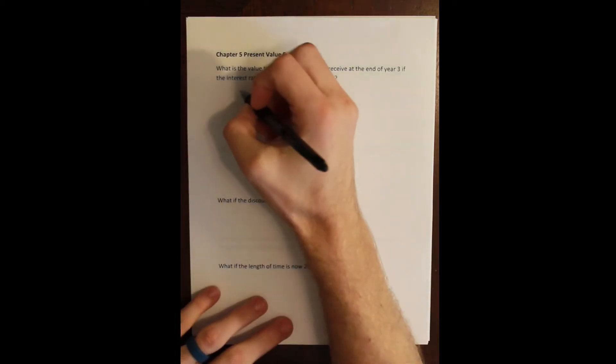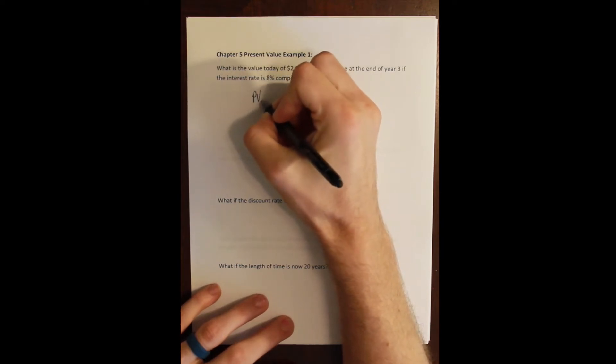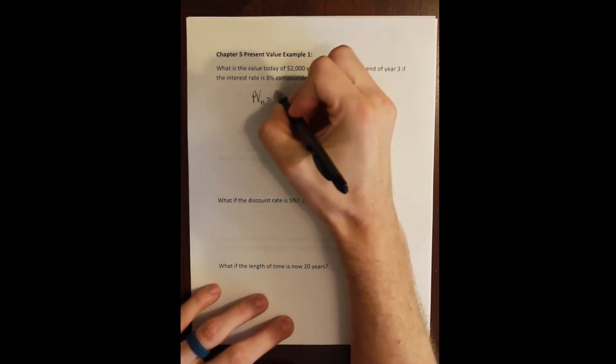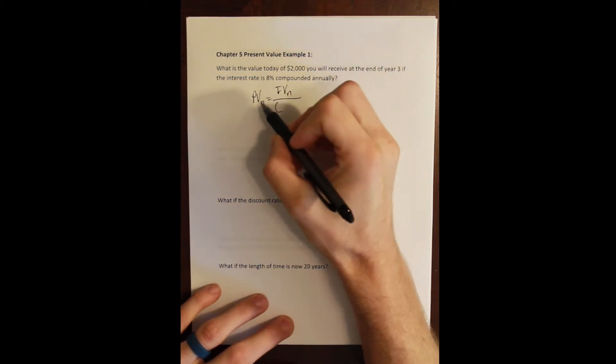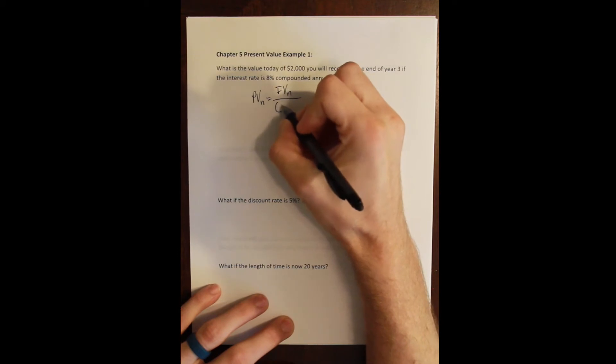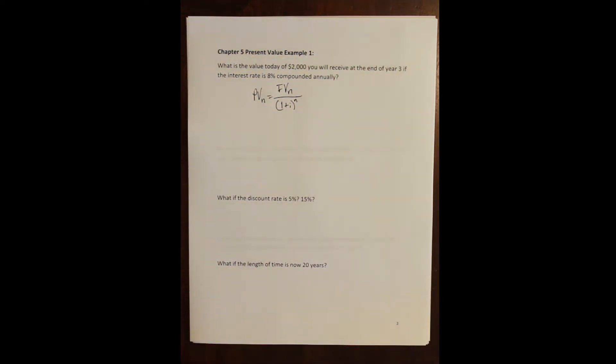And so the next step is we write down the formula and remember that the present value formula is simply a rearranging of the future value formula. So the present value is equal to the future value that we're going to receive divided by one plus the rate raised to the power of n, which is the number of periods that we are going to have to wait.